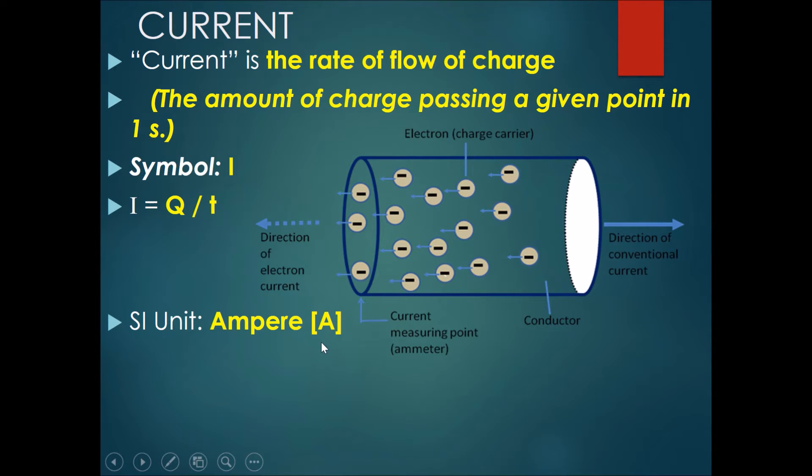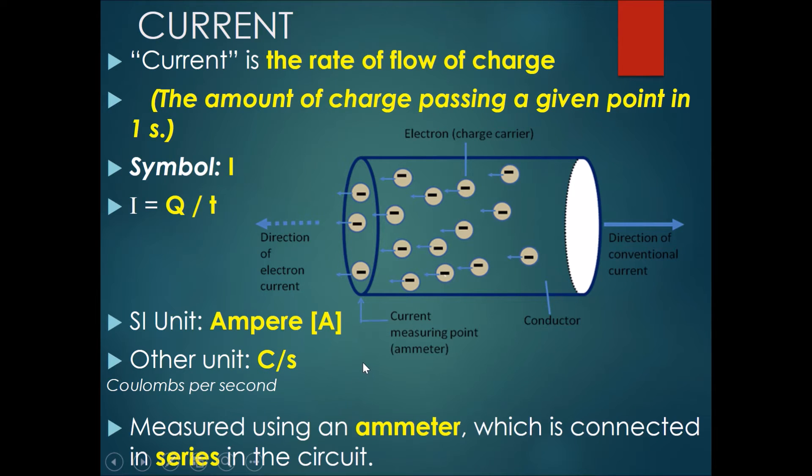The SI unit would be the ampere or A. Another unit would be coulombs per second, how much charge goes through per second, and this is measured using what is called an ammeter which is connected in series in the circuit.